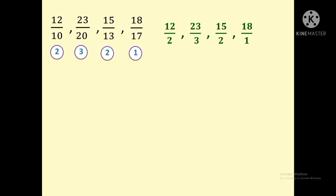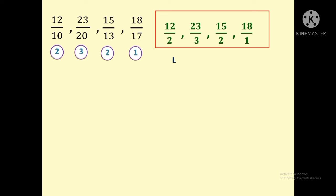Now we find the LCM for the new denominators 2, 3, 2, and 1. The reason we changed the denominator is that finding the LCM for the original denominators 10, 20, 13, and 17 would be quite difficult and time-consuming. Since we changed the denominators, we only need to find the LCM for 2, 3, and 1, which is 6. Next, we are going to convert each new fraction into a number by multiplying each fraction by 6.